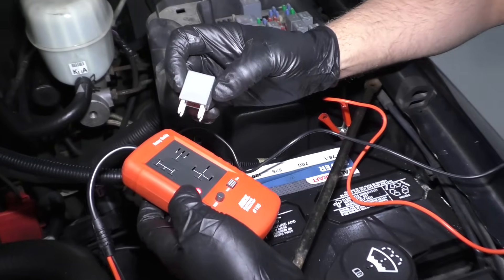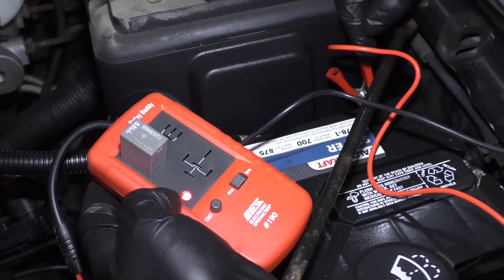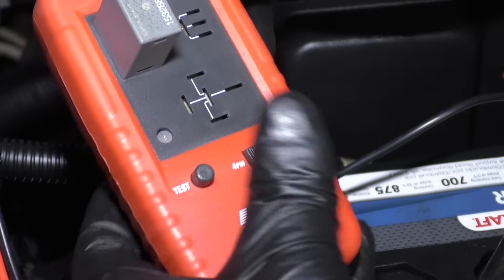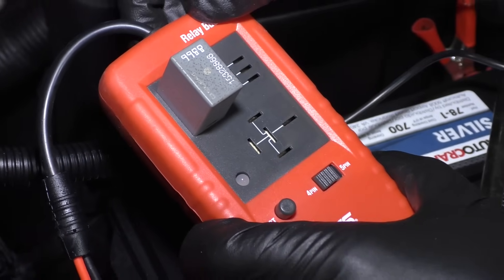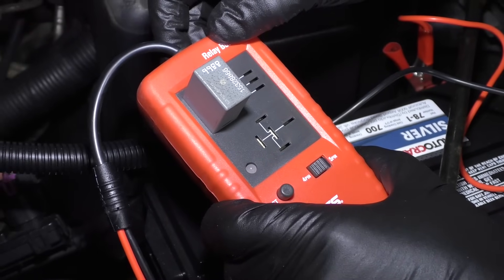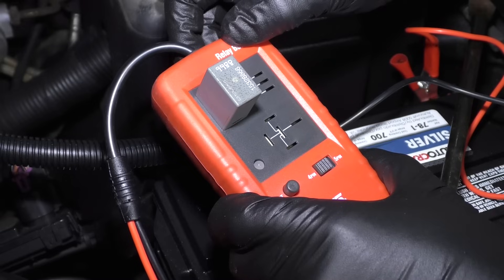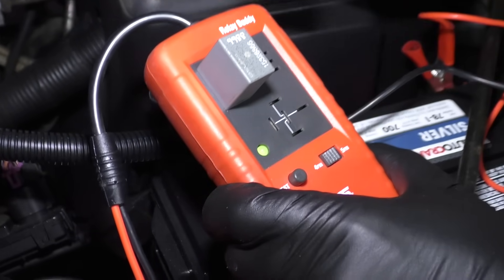What you do is take the four prong relay, stick it in here. You have it attached to battery positive and negative, and then you hit the test button. It's going to test the relay's electronics, and the relay is good.